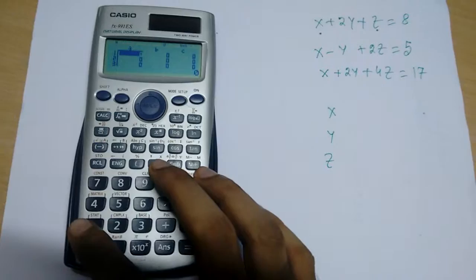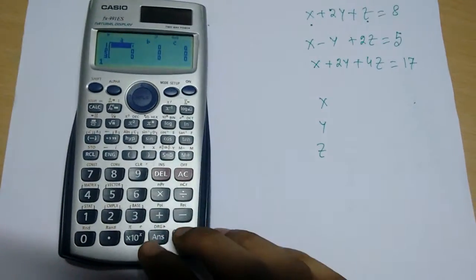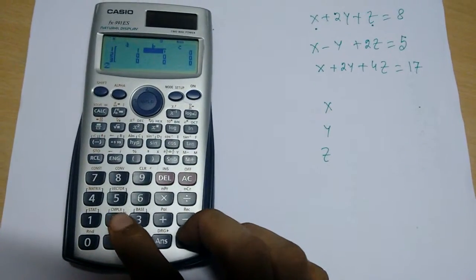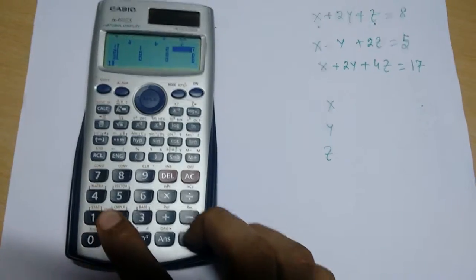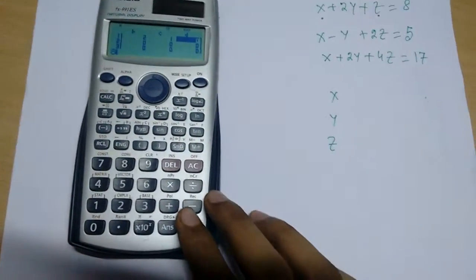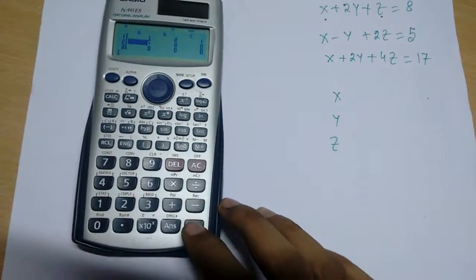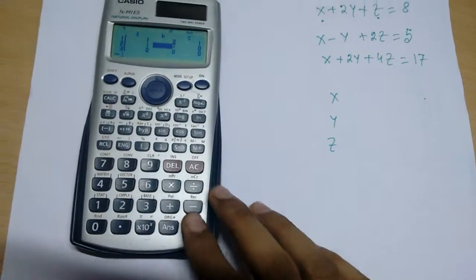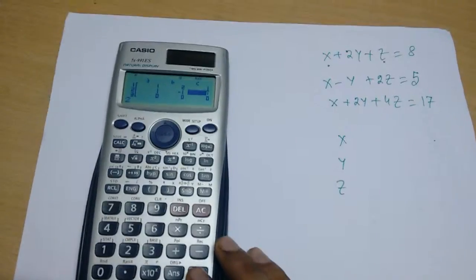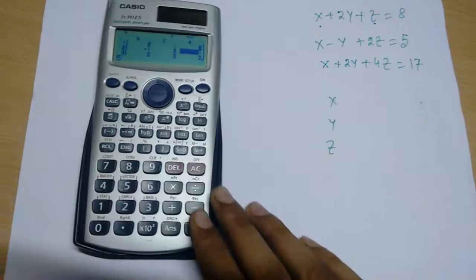Now you press the variables. From first to second you can go by pressing the equal to sign. Then 1, if it is minus 1 then directly put minus 1, then 2, then 5.